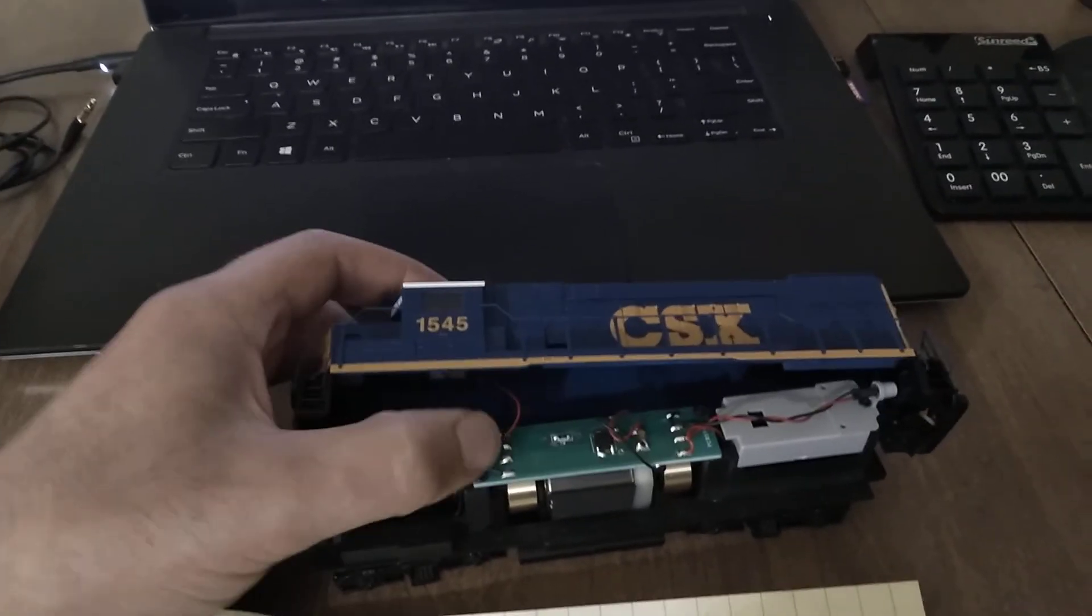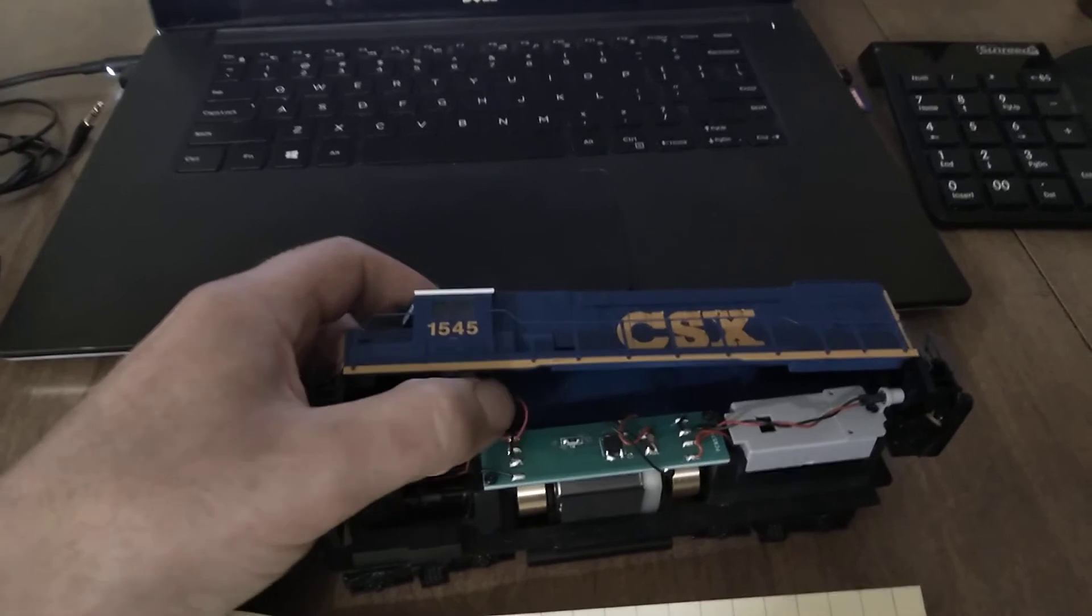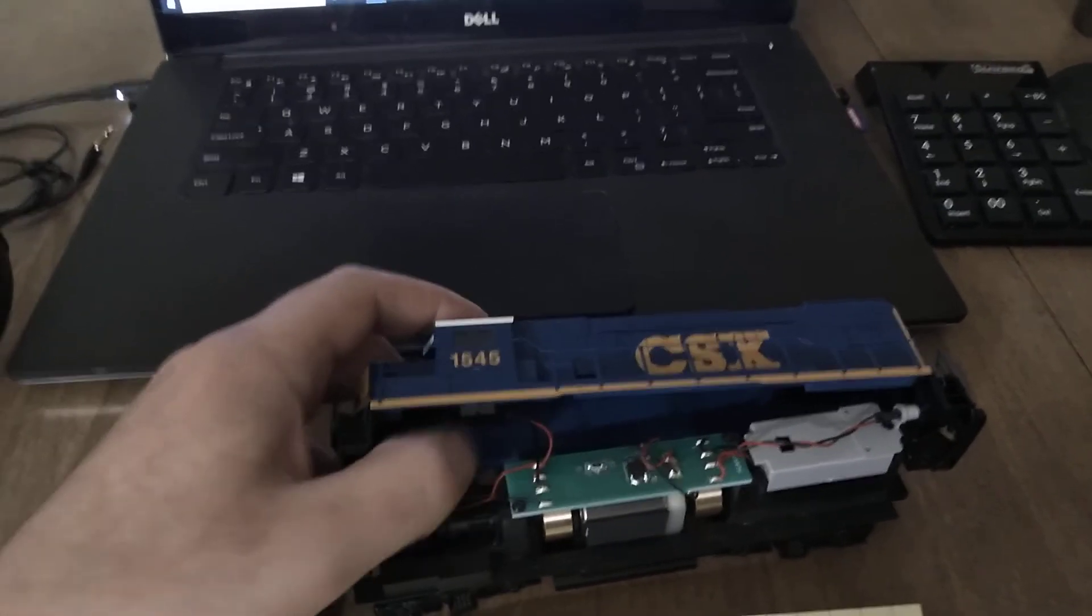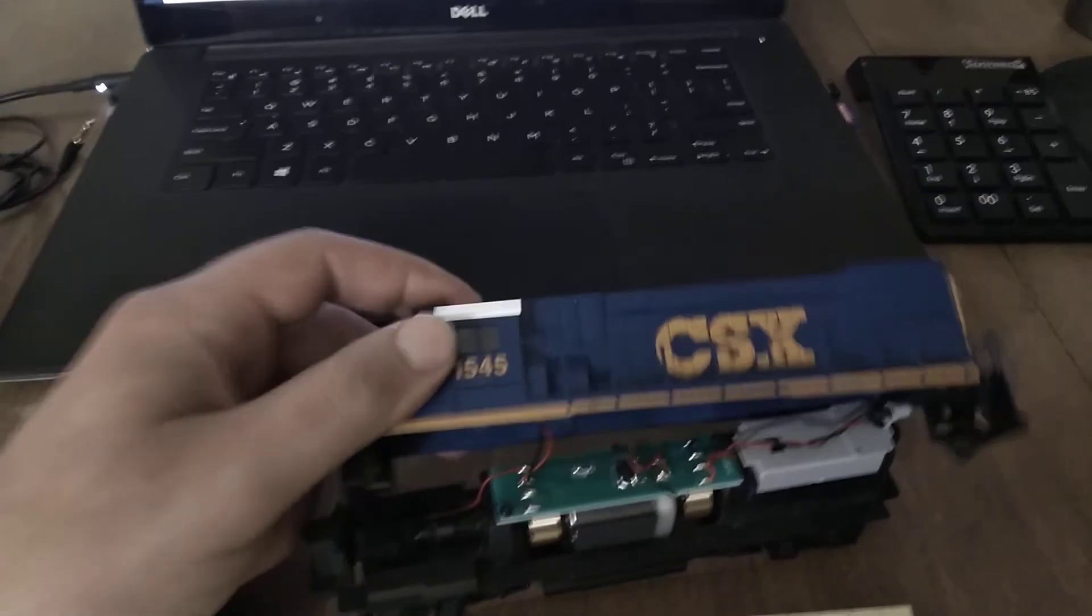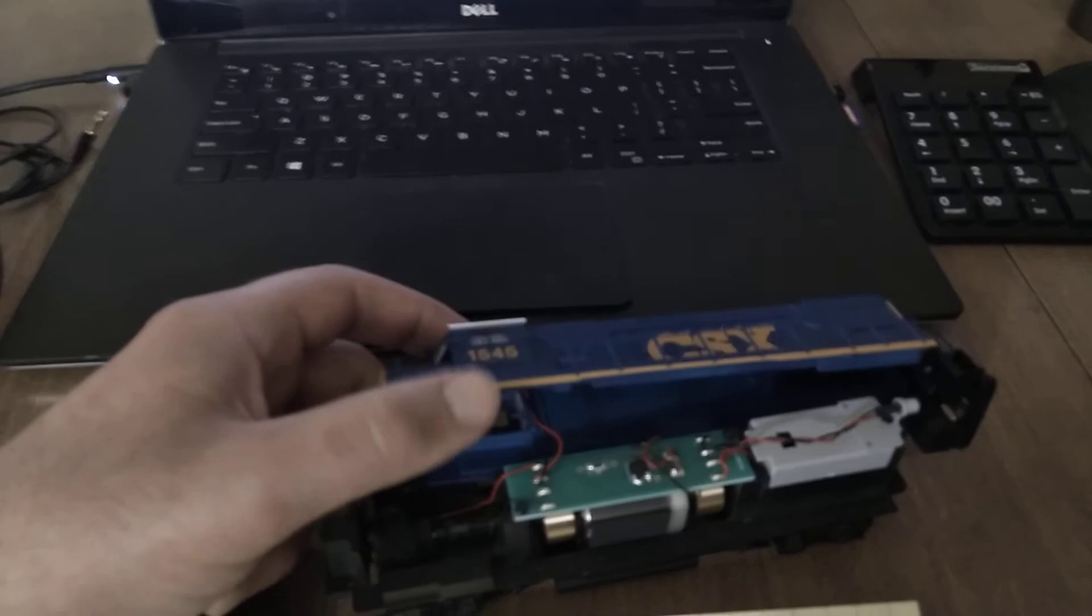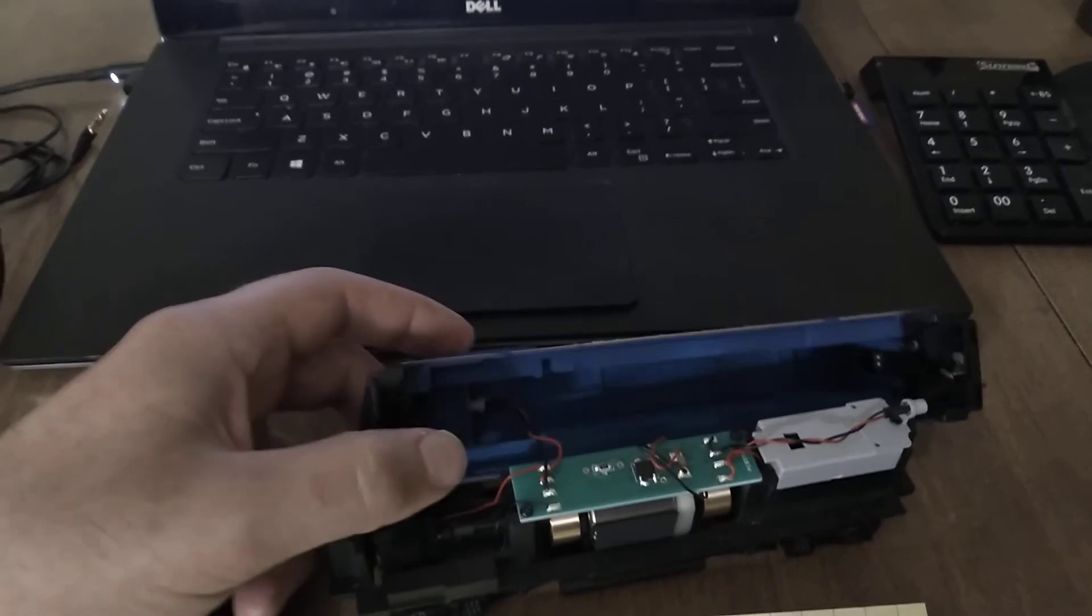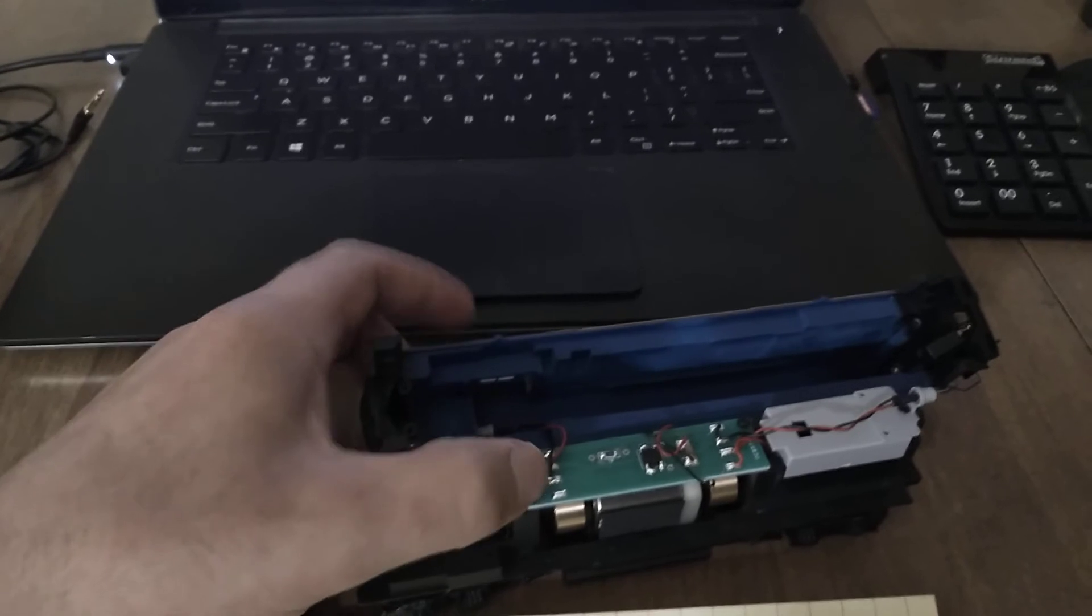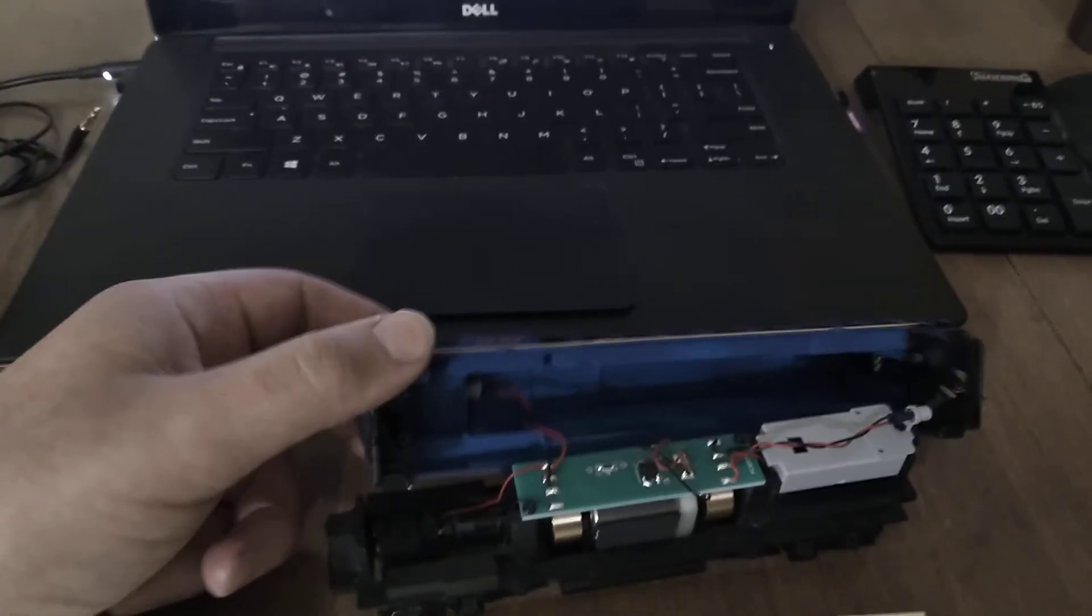Now somewhat annoyingly, in the manual it says there's enough length on these wires here feeding the front LED to be able to comfortably set this on the table, but clearly that's not really the case. You can kind of do that but there's still a lot of tension on this joint here, so I don't really like that.